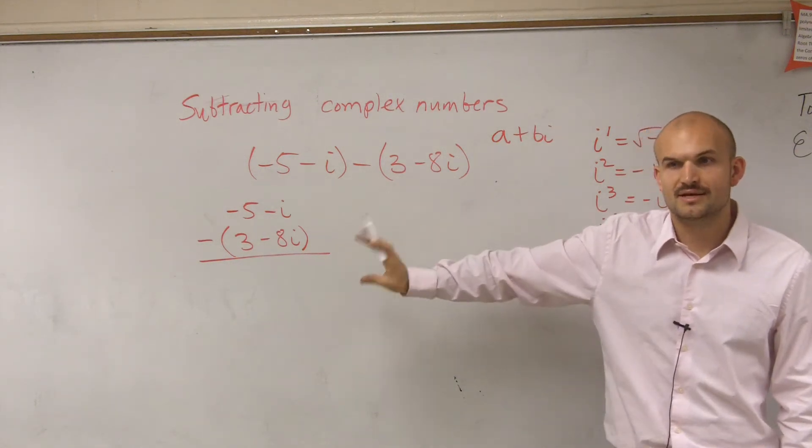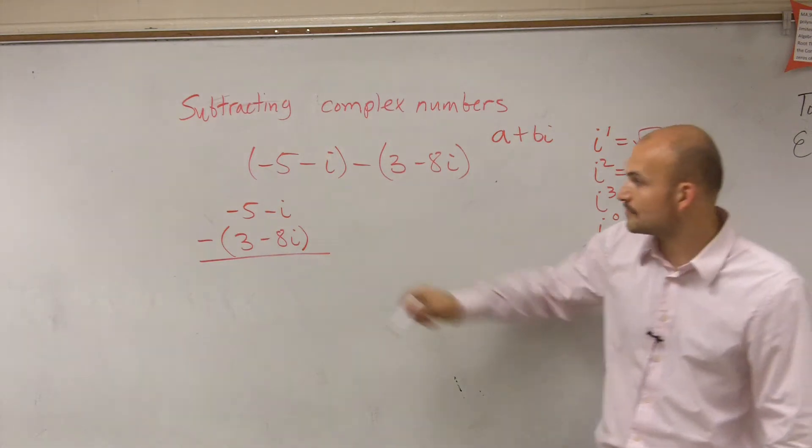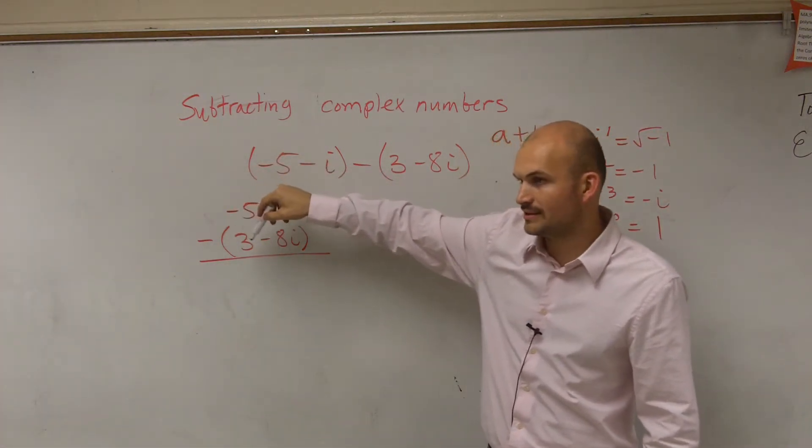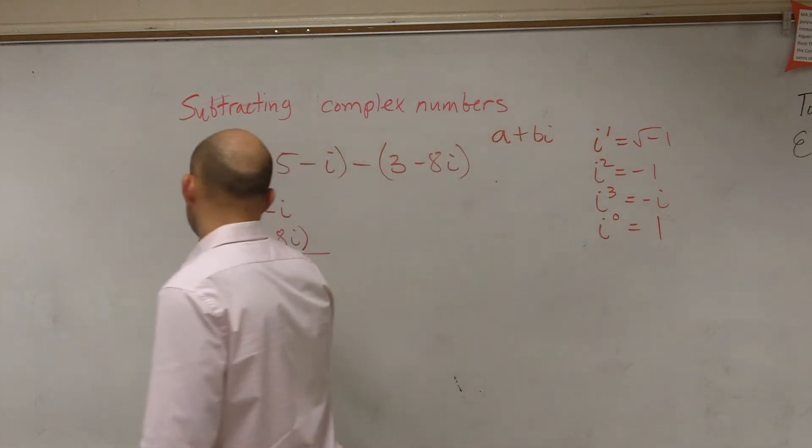So when you do it like this make sure you say it out loud. Negative 5 minus 3, that's negative 8.